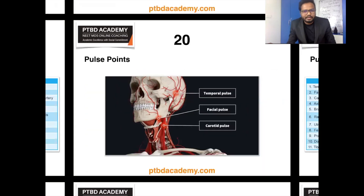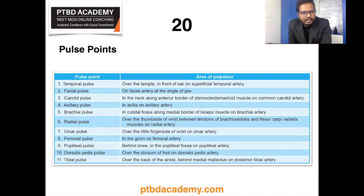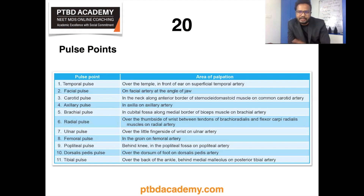We also have additional pulse points as shown in this particular table. Various pulse points are listed to the left and their anatomic areas of palpation to the right. For the facial pulse, serial number 2, it is on the facial artery at the angle of the jaw. Go through all of these pulse points and be very familiar with them.